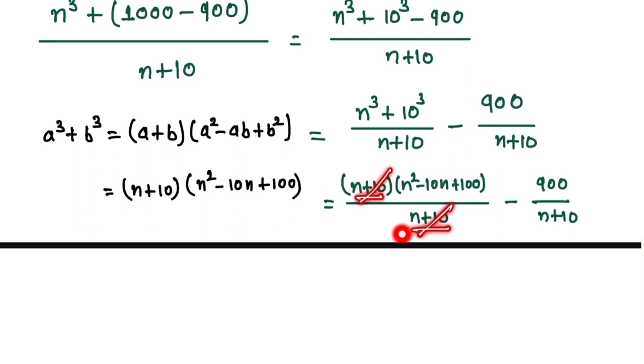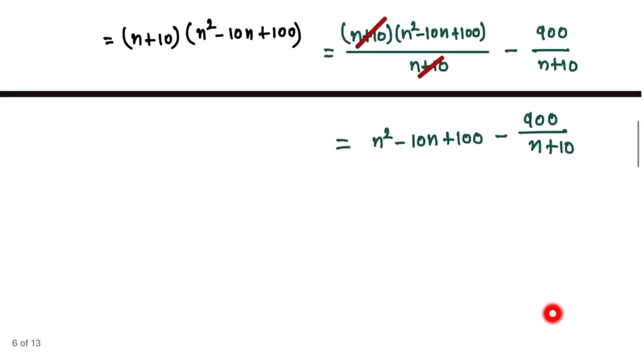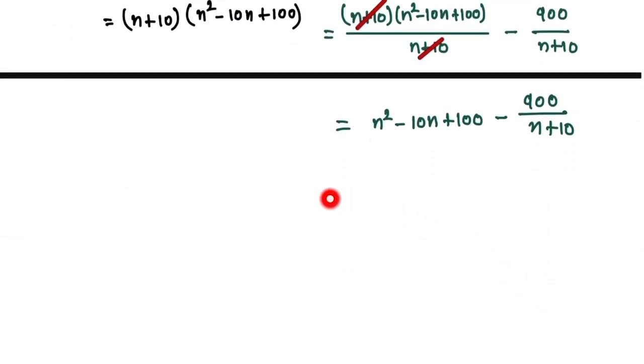So we can write n² - 10n + 100, minus 900 divided by n + 10. Here, n² - 10n + 100 is an integer, so we extract this term and focus on 900 divided by n + 10.